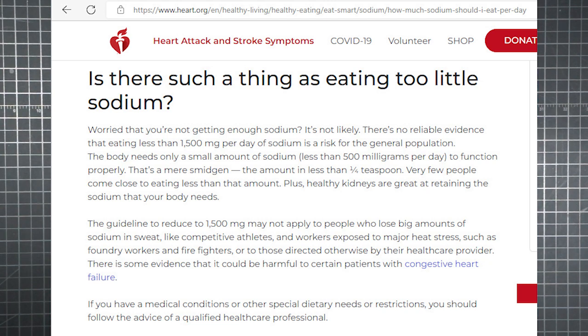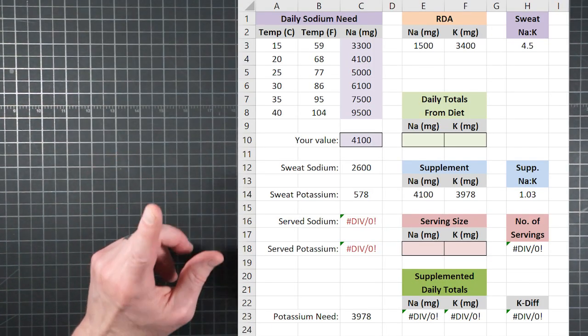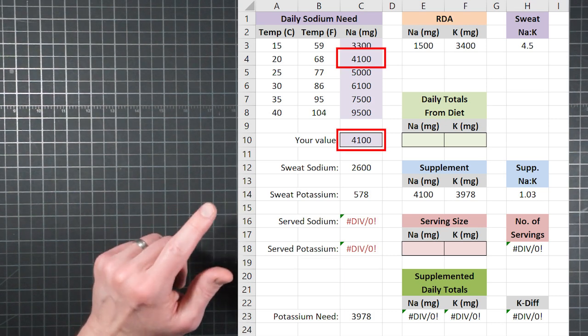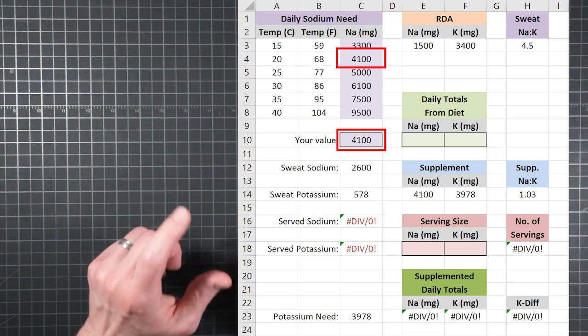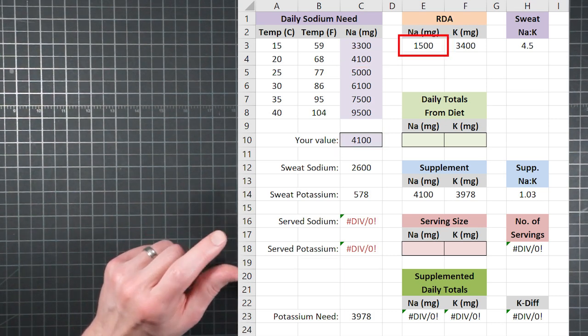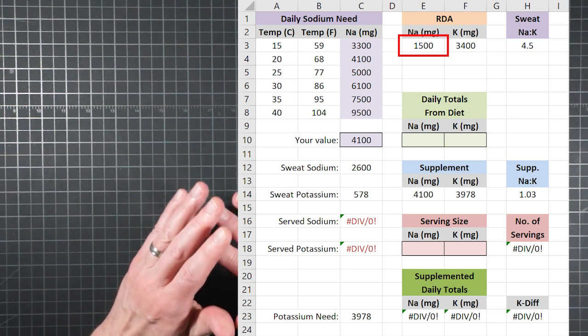Well, if 7,500 milligrams is your total daily need and 6,000 is what was lost just through sweat, that leaves 1,500 milligrams as that portion of the total which is due to normal dietary needs alone. Well, normal diet plus sweat loss equals total need. The 1,500 milligrams just serendipitously winds up being the same as what the American Heart Association says is your daily minimum.